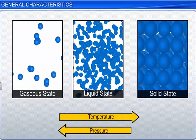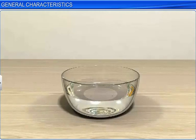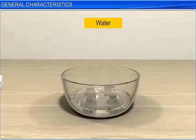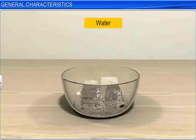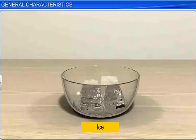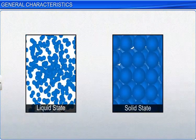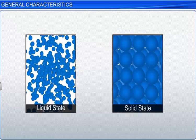For example, at one atmospheric pressure, water in liquid state gets converted into its solid form, ice, at 0 degrees Celsius or 273 Kelvin. Let us now understand how the molecules of water in liquid state attain the molecular arrangement of water in solid state.